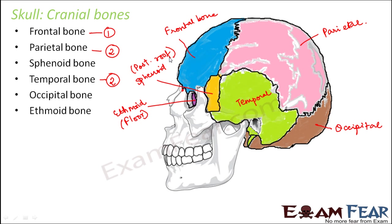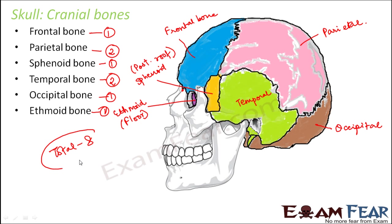So this is how the entire skull is made up. There are 8 cranial bones in total: one frontal, two parietal, one sphenoid, two temporal, one occipital, and one ethmoid — giving a total of eight cranial bones.